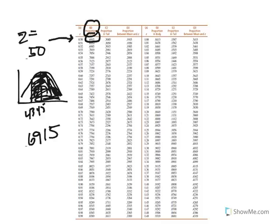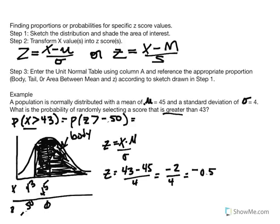Back to our probability statement: what is the probability of randomly selecting an x-value greater than 43? We converted that to: what is the probability of selecting a z-score above negative 0.50? From the unit normal table, that proportion is equal to 0.6915. Another way to understand this is that there is a 69.15% chance that we would randomly select a score greater than 43 in this distribution.